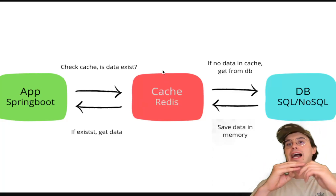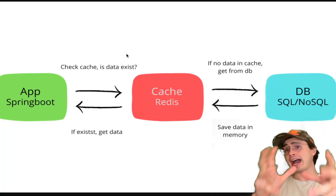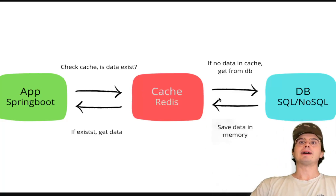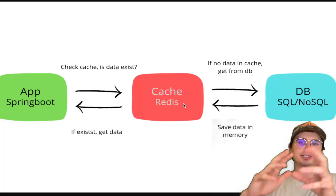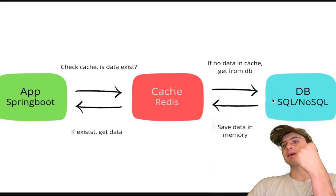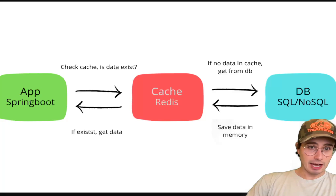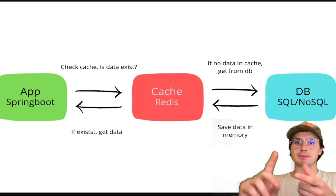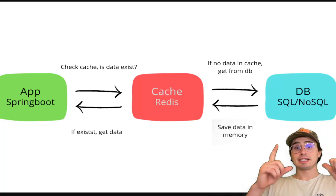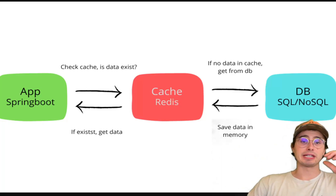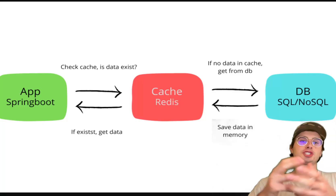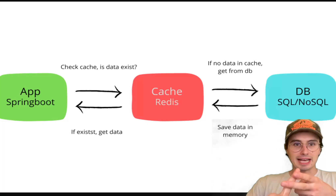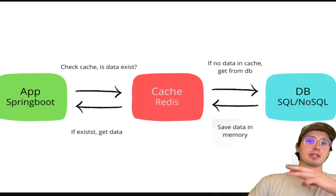Redis core differentiator is that it doesn't really act as your primary store — instead it acts as a cache or temporary store for the most commonly used data, the data you need to constantly read from or write to. In a proper setup, only about 10% of use cases should need to request data from a backing database. Redis stores data primarily in memory and offers persistence features like periodic snapshotting and append-only file logging. These data structures enable pretty versatile operations in an unconstrained in-memory format.